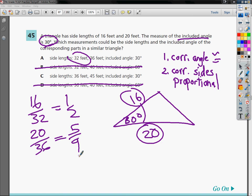Let's try C. In this case, 16 over 36 gives you four ninths. And then 20 over 45 also gives you four ninths. So that's our answer.